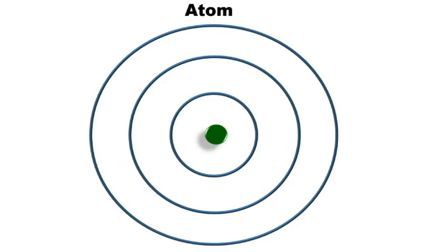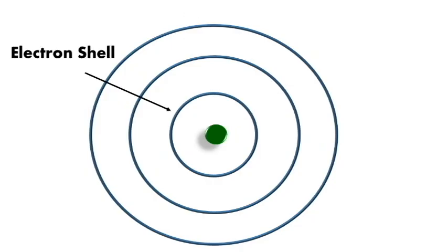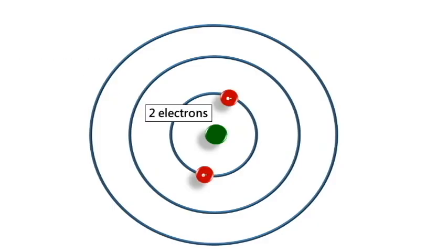Let's look at a model of an atom. An atom has a nucleus where the protons and neutrons are located. Around the nucleus there are electron shells where all the electrons are located. The first electron shell can hold two electrons maximum. The electrons in the outermost shell are called valence electrons, which determine the properties of the atom.